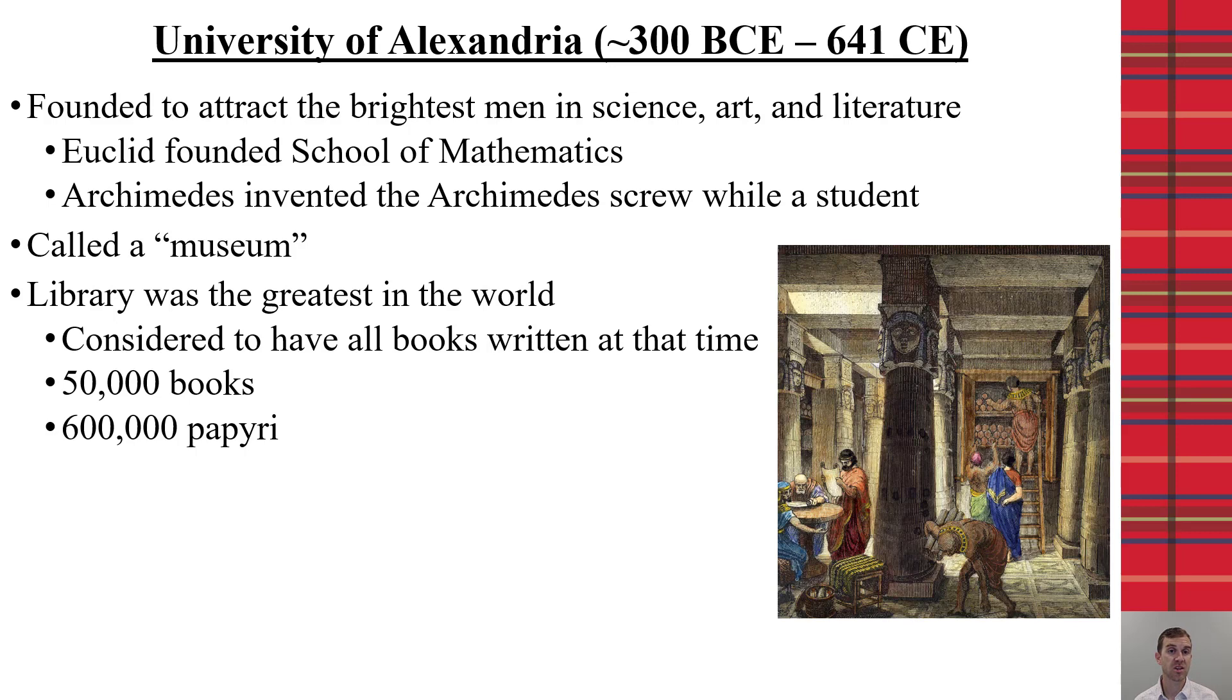At that time, the library of the University of Alexandria was considered the greatest in the world and included what was considered all the known works of that time, which is over 50,000 books and 600,000 papyri.